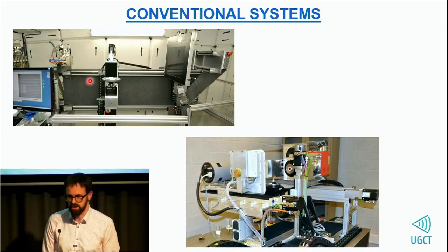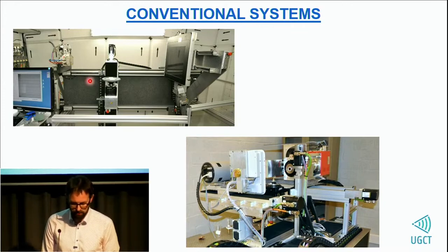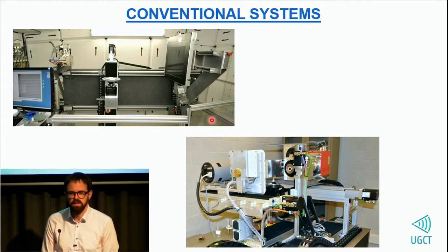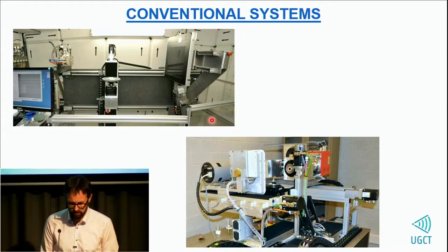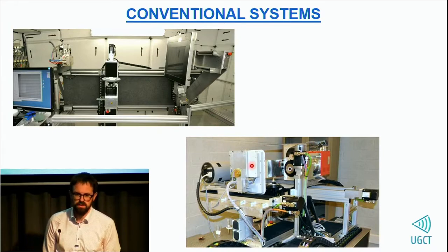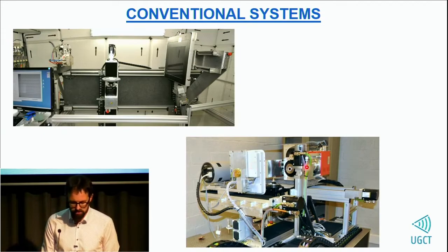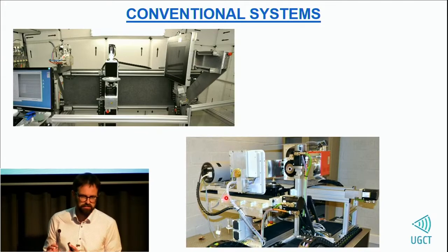On the other side we can do very big objects — full human lungs, for example, are things we do relatively often on this system. For very high resolution, that's the nanowood scanner. As the name suggests, it was mainly built for wood research, really to get to very high resolution to characterize wood species. That system has two different sources — one of those can go down to about 400 nanometer resolution, which is still really high resolution. It also has two detectors depending on whether the object is relatively heavy or light.